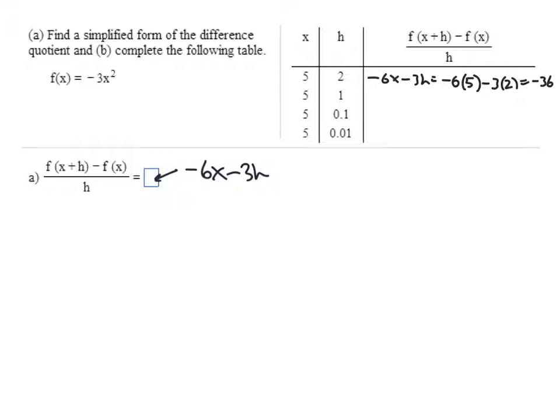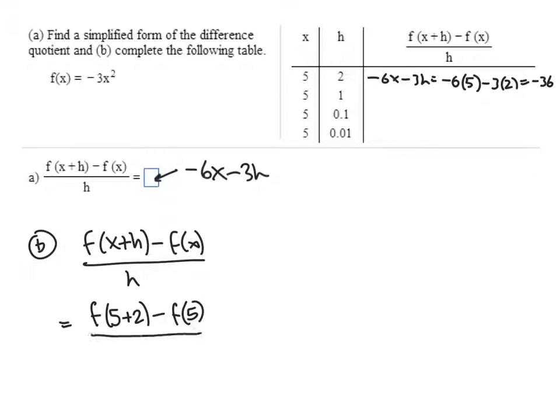But what we could also do is just realize that when we have f of x plus h minus f of x divided by h, we can just simply plug in our values of x and h. So x is 5, h is 2, x is 5, and h is 2. So this should also work out to be negative 36. I'm just showing you a different way to do it. So that's f of 7 minus f of 5 divided by 2.